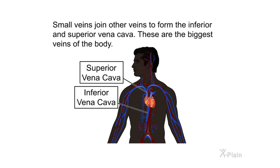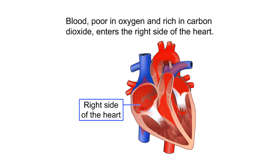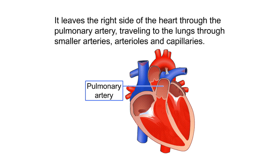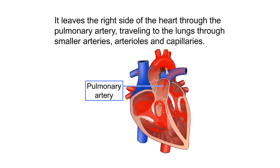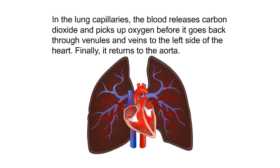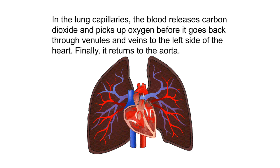Small veins join other veins to form the inferior and superior vena cava, the biggest veins of the body. Blood poor in oxygen and rich in carbon dioxide enters the right side of the heart. It leaves through the pulmonary artery, traveling to the lungs through smaller arteries, arterioles, and capillaries. In the lung capillaries, the blood releases carbon dioxide and picks up oxygen, before returning through venules and veins to the left side of the heart and finally back to the aorta.